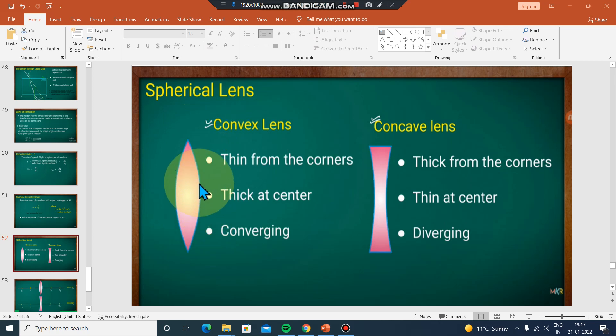Convex lens is thin from the corners. The corners are thin, and it's thick at the center - thin from the corners on both sides. It is a converging lens.